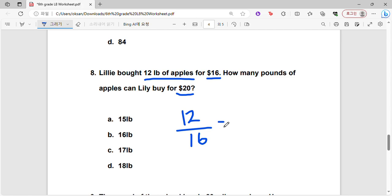And again, let's do the same thing as the previous question. We can simplify this. Both are divisible by 4, that's the greatest common factor. So 12 divided by 4 is 3, and 16 divided by 4 is 4.